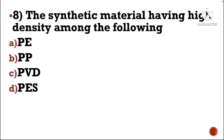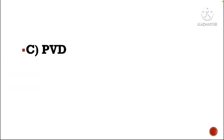Next question: The synthetic material having high density among the following — Option A: PE, Option B: PP, Option C: PVD, Option D: PES. The correct answer is Option C, PVD.